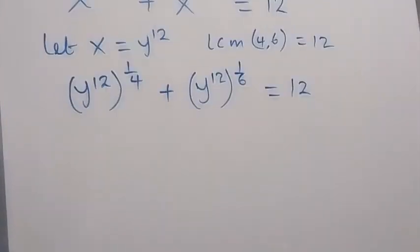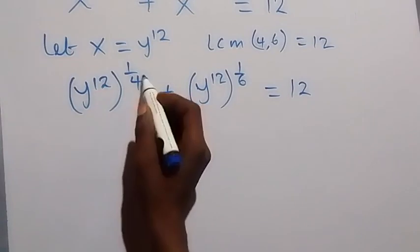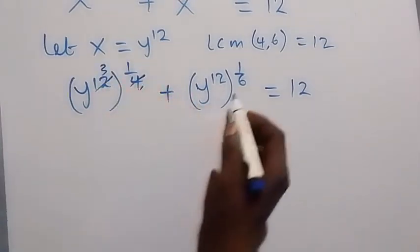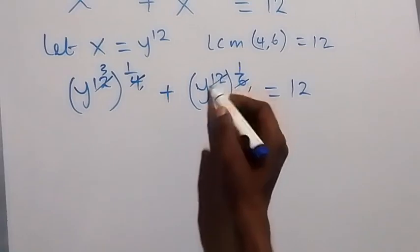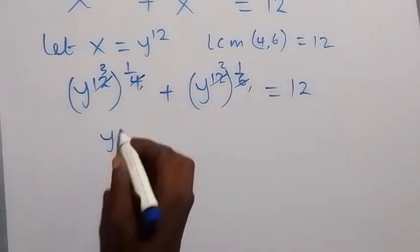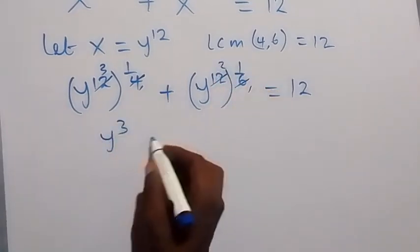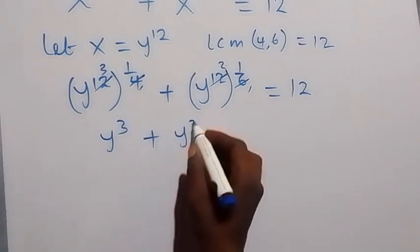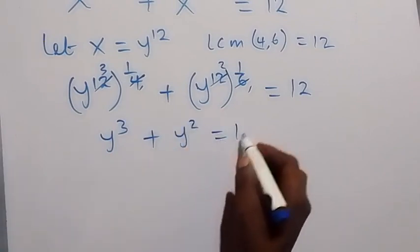Applying the laws of indices, the powers multiply. 12 times 1 over 4 gives 3, and 12 times 1 over 6 gives 2. So we have y raised to the power of 3, plus y squared, equals 12.